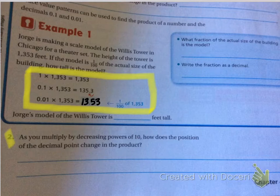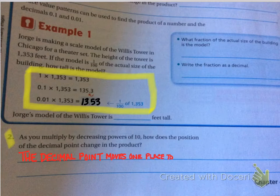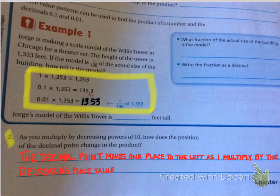If the pattern continues and I'm multiplying by a hundredth, my answer would be 13.53. The decimal point moved twice because I had two numbers in my decimal. Question two asks: As you multiply by decreasing powers of ten, how does the position of the decimal point change? The decimal point moves one place to the left. You first have to decide: Am I multiplying by a power of ten, or am I multiplying by a decimal place value? That will determine which way you're moving the decimal.